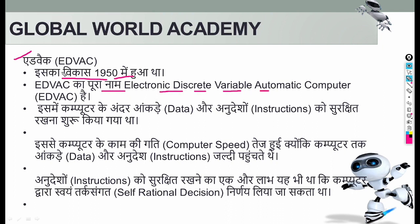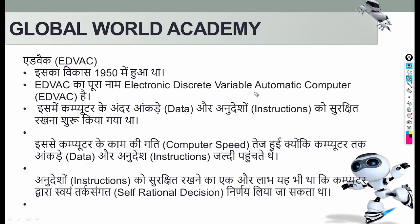EDVAC — Electronic Discrete Variable Automatic Computer — was the third first-generation computer. A significant improvement here was that data and instructions could now be stored internally. When we talk about the first computers, storage began here. However, the speed was still very slow because the computer's data and instructions needed time to be retrieved — unlike today where we can get Google results within milliseconds.